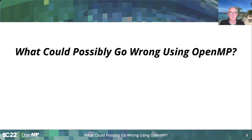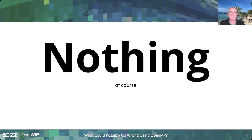This talk is going to be a little bit different than what I usually talk about, and this is why I gave it the title: What could possibly go wrong using OpenMP? The obvious answer is nothing — of course nothing can go wrong. Everything is perfect and there are no problems at all. But we all know better, and that's what I'm going to discuss in this presentation.